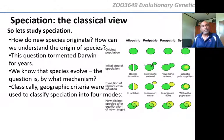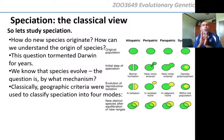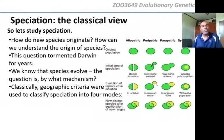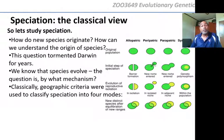In peripatric speciation, because one population is very small, genetic drift hammers that population. Peripatric speciation relies on very high genetic drift in one of the populations, which makes that population speciate much more quickly — it becomes different from its parent population very quickly. It also involves isolation between the small population and the parent population, and eventually when they are no longer isolated, they cannot reproduce together because they've already become different species.